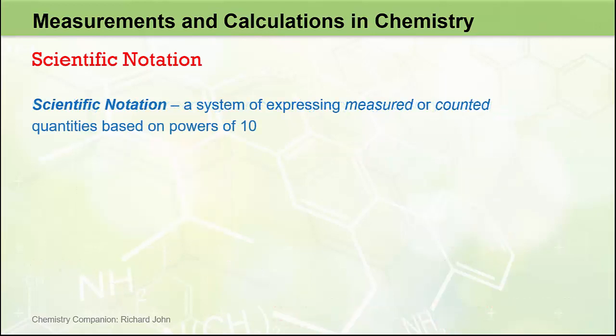Scientific notation is a system of expressing measured or counted quantities based on powers of 10, and it's probably best shown via example. This number here, 3.264 × 10 to the 5, is an example of a number expressed in scientific notation.